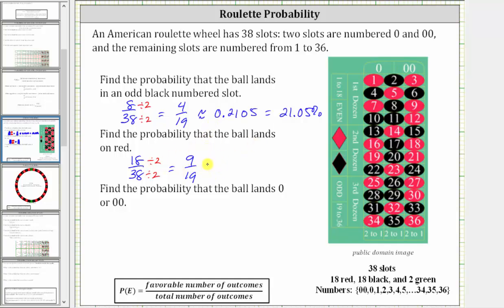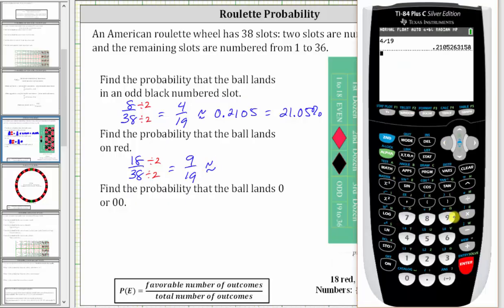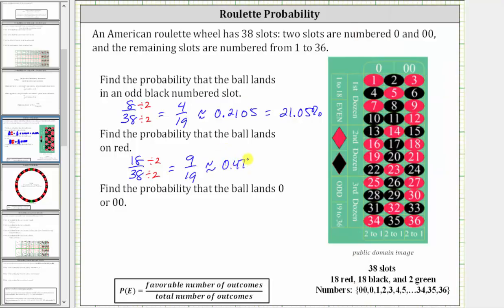Let's also get our decimal approximation for this. 9 divided by 19 to four decimal places is approximately 0.4737, which would give us approximately 47.37%.